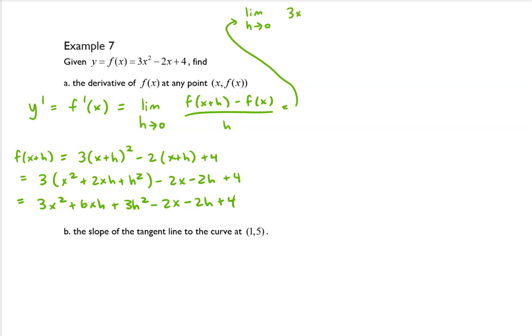3x squared plus 6xh plus 3h squared minus 2x minus 2h plus 4, and then I want to subtract off 3x squared minus 2x plus 4 all over h.